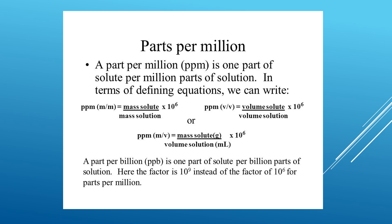Parts per billion, or PPB, is one part of the solute per billion parts of the solution. To compute for PPB, replace the factor from 10 raised to the power of 6 to 10 raised to the power of 9, or 1 billion.